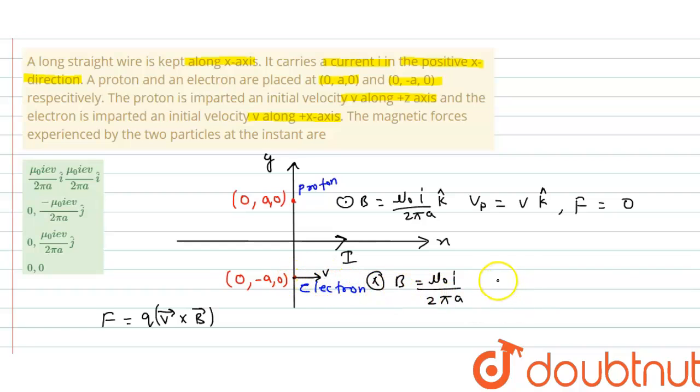So magnitude of force is q v into B sin 90, which is 1. So q is small e, charge on electron, and v into B is μ₀i upon 2πa. This is the magnitude of force.